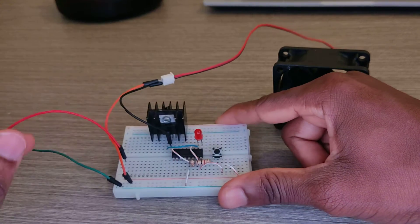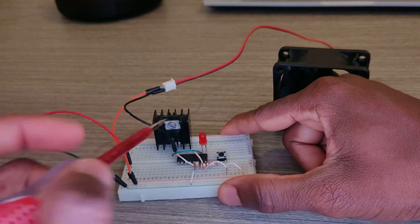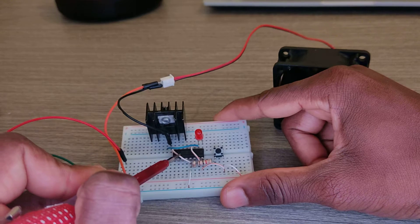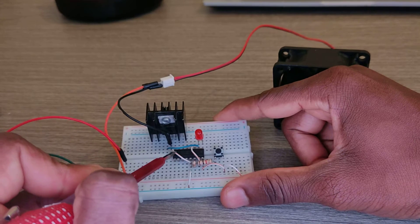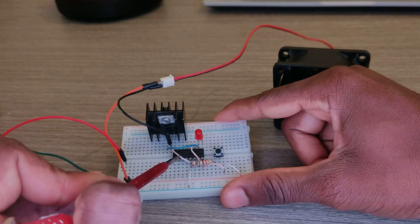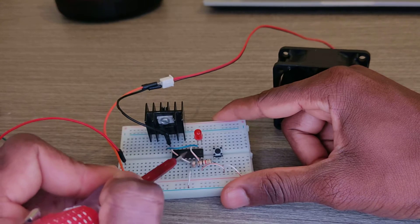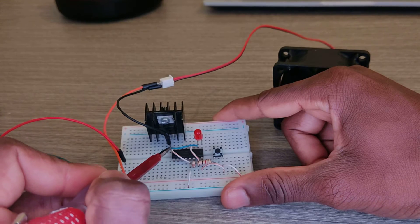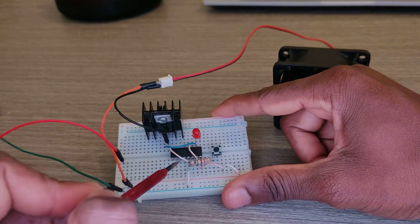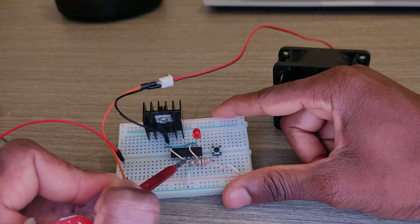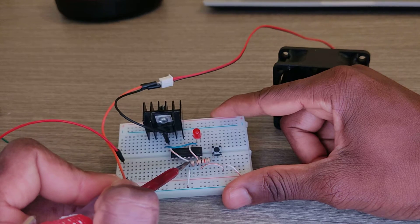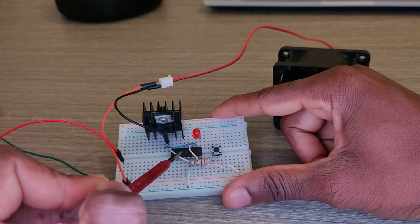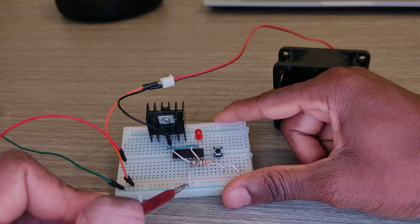Now the source is going to ground, to pin eight of the IC. Pin eight of this IC is the ground. Pin eight and pin thirteen are connected together and they're going to ground.